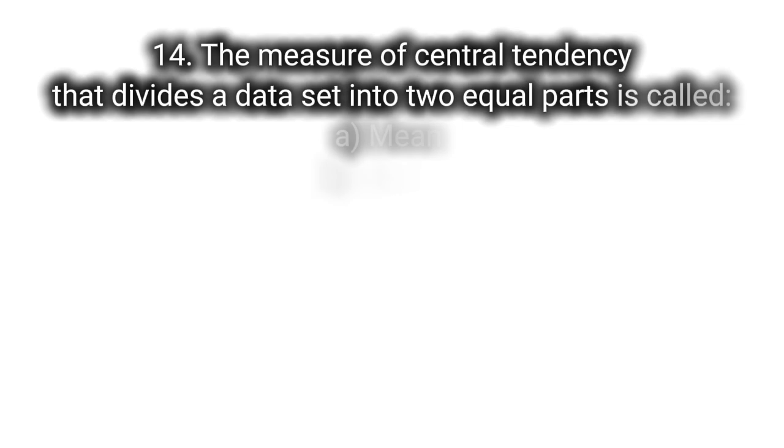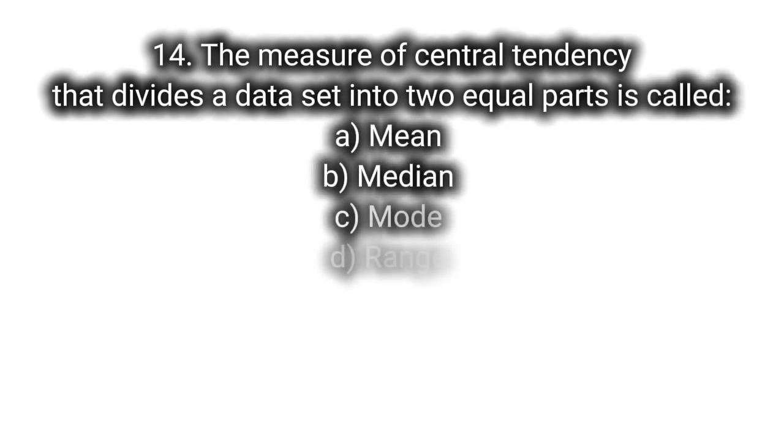Q14: The measure of central tendency that divides a data set into two equal parts is called A. mean, B. median, C. mode, D. range.